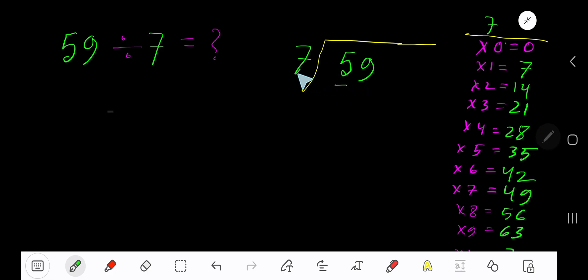5 - 7 goes into 5 how many times? 0 times, as 5 is less than 7. 0 times 7 is 0. Subtract 5. Now bring down the next digit. 7 goes into 59 how many times?